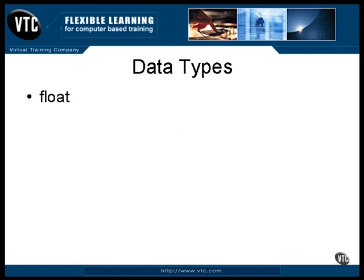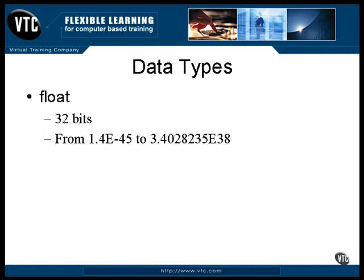A real number is one that has a decimal point. A float data type is 32 bits long and includes an exponent which specifies the location of the decimal point. The range on a real number is a bit different than on an integer — any real number can be positive or negative. The smallest possible exponent is minus 45, meaning there can be up to 45 zeros behind the decimal point but before the first digit. A positive exponent of 38 moves the decimal point 38 digits to the right. There are only 23 bits used to represent the actual number, even though the decimal point can greatly change the magnitude.